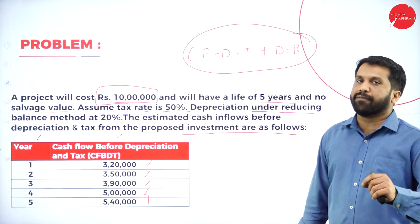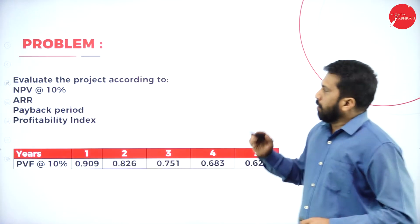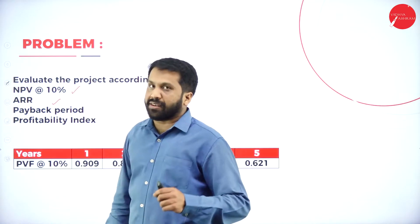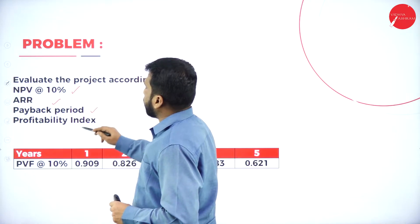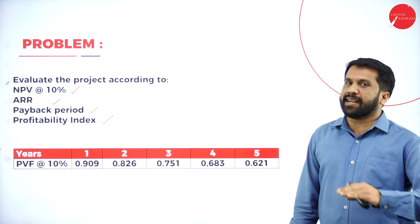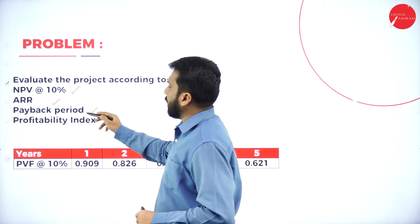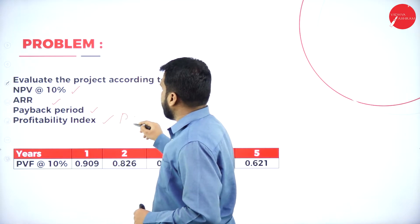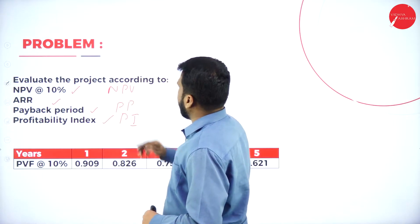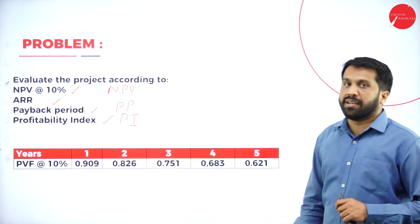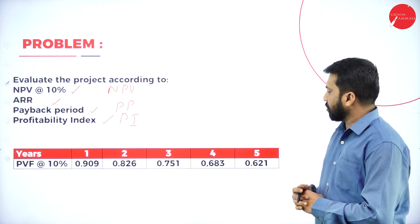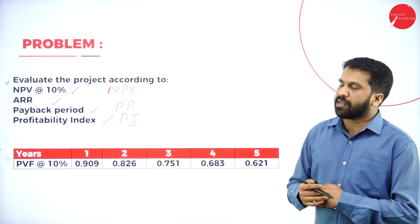The cash inflow values are: 3 lakh 20,000; 3 lakh 50; 3 lakh 90; 5 lakh; and at the end 5 lakh 40,000. Now evaluate the project according to NPV, ARR (accounting rate of return), payback period, and profitability index. ARR will come in the next session. Today we will find NPV, payback period, and profitability index. The discount rate is 10 percent.